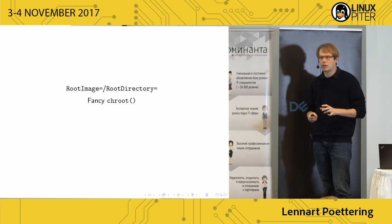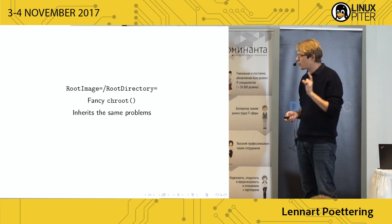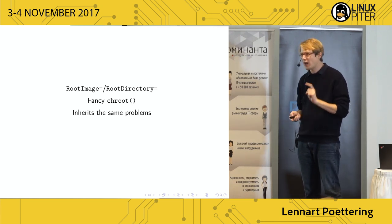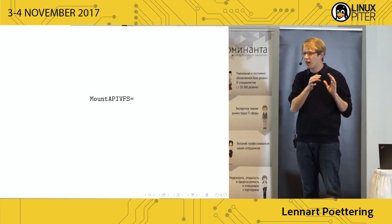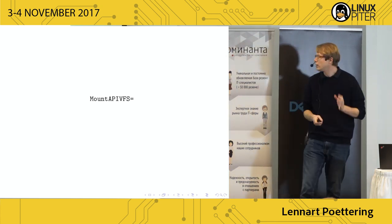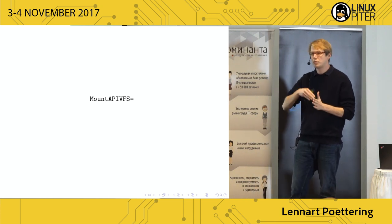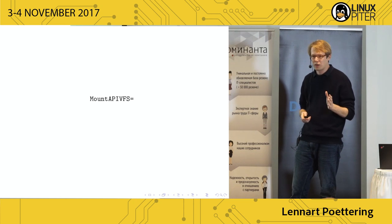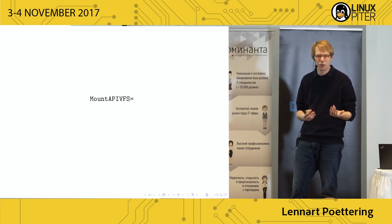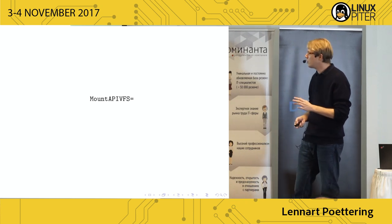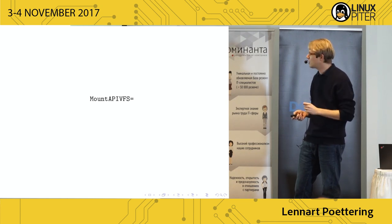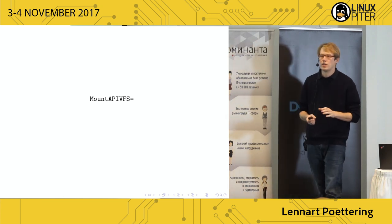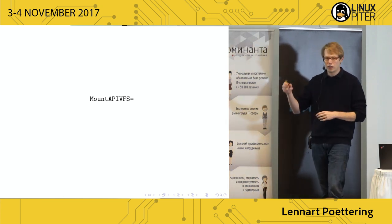RootImage and RootDirectory are ultimately a fancy chroot and inherit the same problems. It's usually not sufficient to just mount a directory as the new root — you also need to mount a few pseudo-filesystems into it: /proc, /sys, and /dev, which are how the kernel exposes API functionality to userspace. In systemd, this is exposed by the MountAPIVFS unit file setting. It's a boolean — if you turn it on, you get the root directory and automatically get those three directories mounted below it.